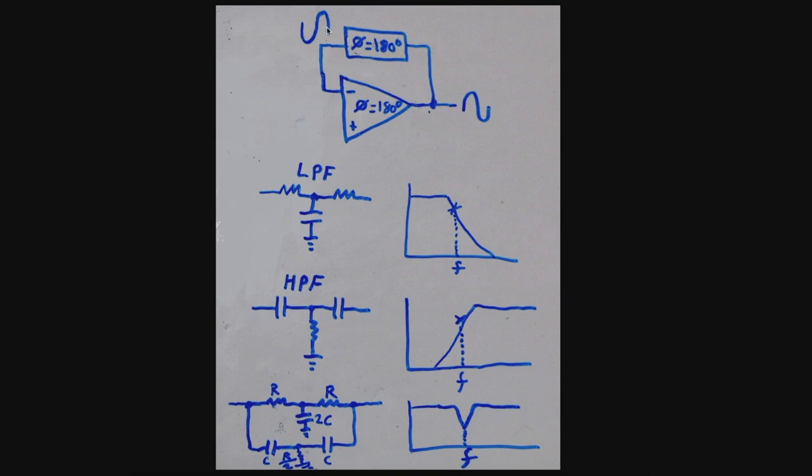But we only want the total phase shift around the loop to be a multiple of 360 for that frequency. This feedback loop is just acting as regular negative feedback for all other frequencies, and the op-amp remains stable and does not oscillate at any other frequency.